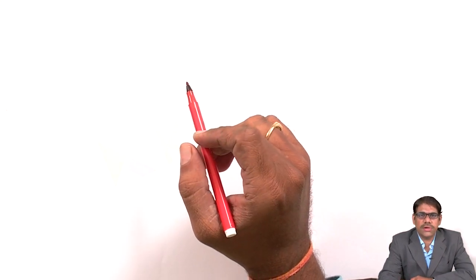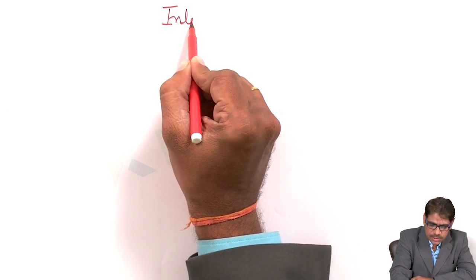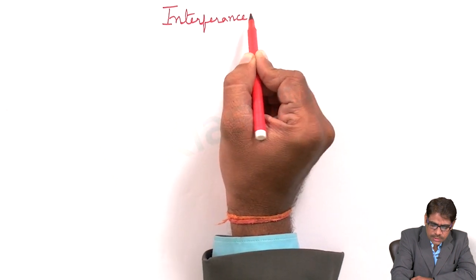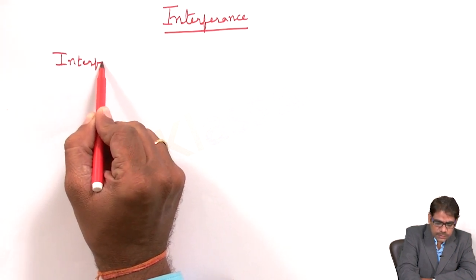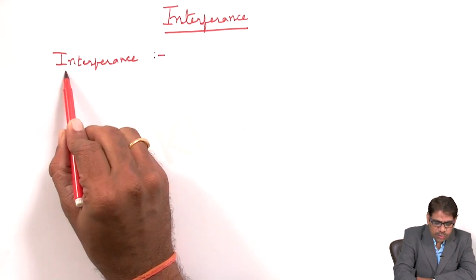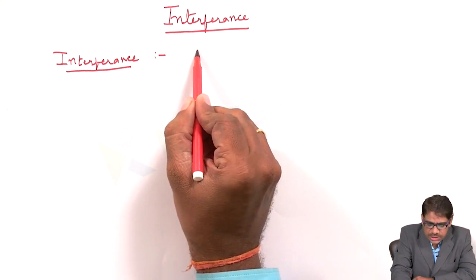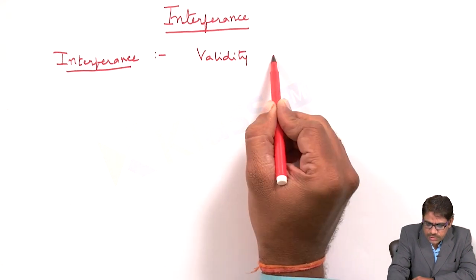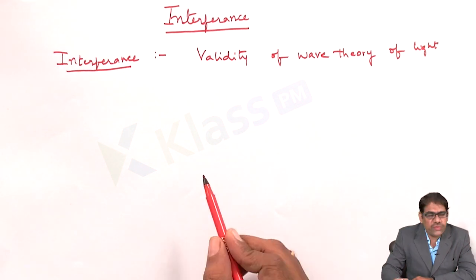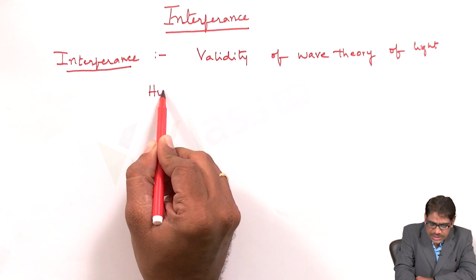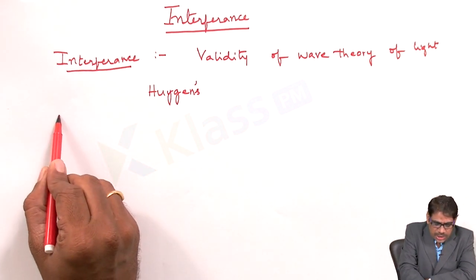Today let us discuss about the interference of light. The phenomenon of interference has proved the validity of the wave theory of light. This wave theory of light was indeed explained by Huygens. Now let us get through with the introduction part regarding interference.